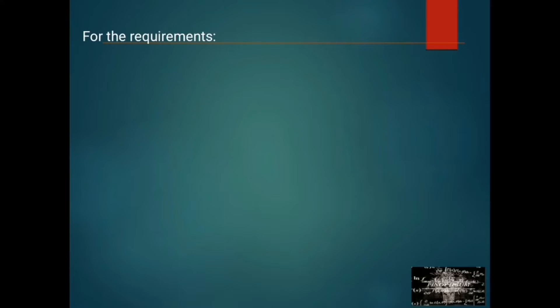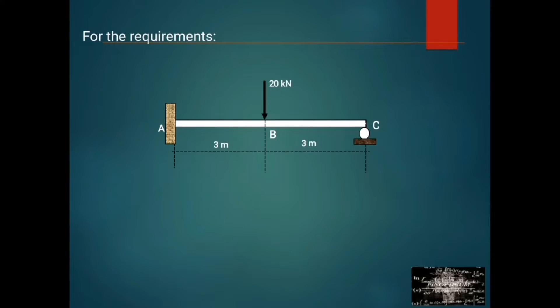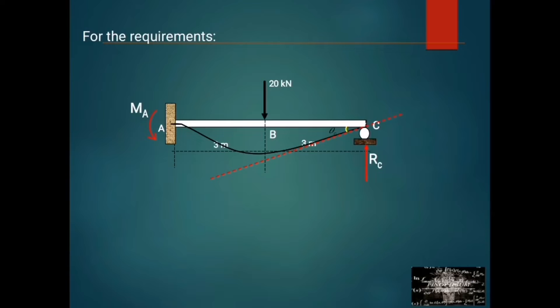For the requirements, we have: RC (reaction at roller), the slope at point C — so we need to construct the elastic curve and the tangent line at point C — giving us Theta C, and the moment at point A.